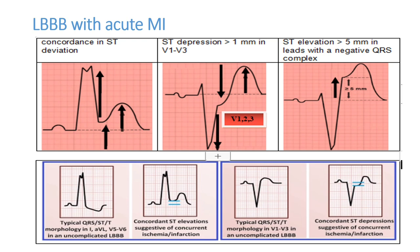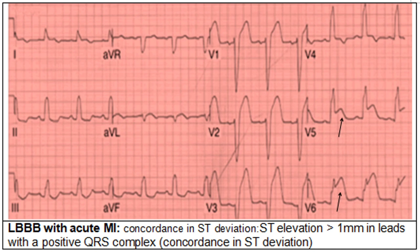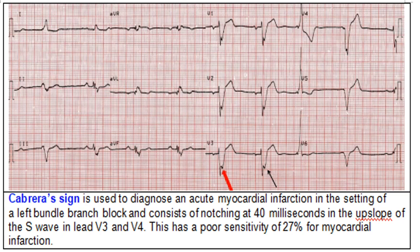In this ECG tracing showing LBBB with wide QRS complex, you can see in V5 and V6 there is an M pattern of the QRS complex, but the ST and T waves are going in the same direction — that means concordance. This concordant ST deviation is a good sign of myocardial infarction with LBBB. However, cardiac enzymes must be checked to confirm the diagnosis of myocardial infarction.